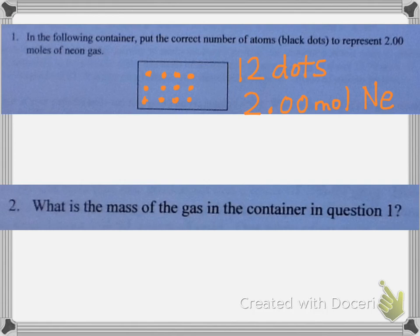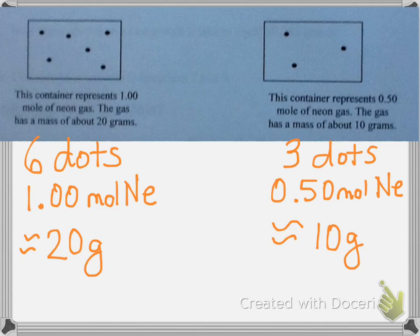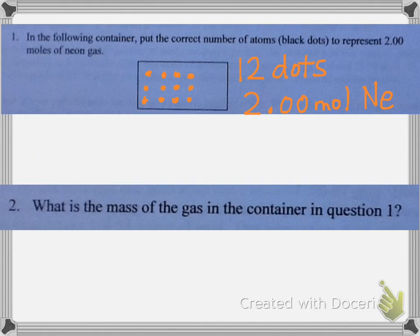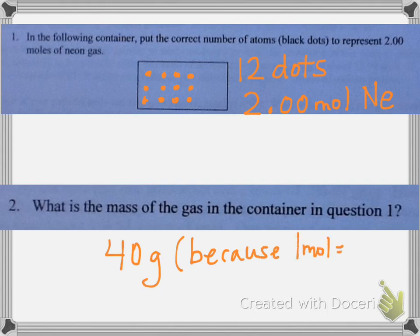Question number two: what is the mass of the gas in the container in question one? Well, if one mole had a mass of 20 grams, and if I have twice as many moles, I'm going to have twice as much mass. So the mass here is going to be 40 grams, because one mole equals 20 grams — therefore two moles is going to equal 40 grams.